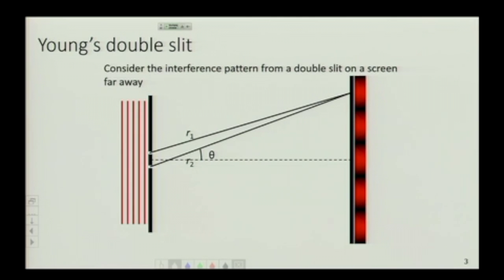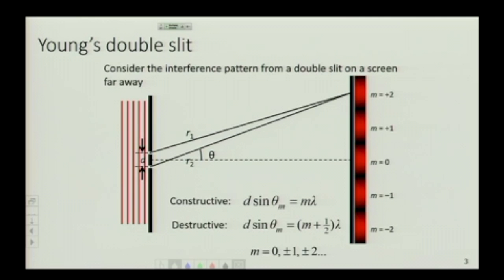So we went over the conditions for constructive and destructive interference. And for this particular setup what we have is two slits. We haven't talked about the width of the slit yet, we've talked about the separation of the slits. So I have two slits, have some separation D, I have a screen that is some distance away, and on that screen I get this pattern of bright and dark fringes.